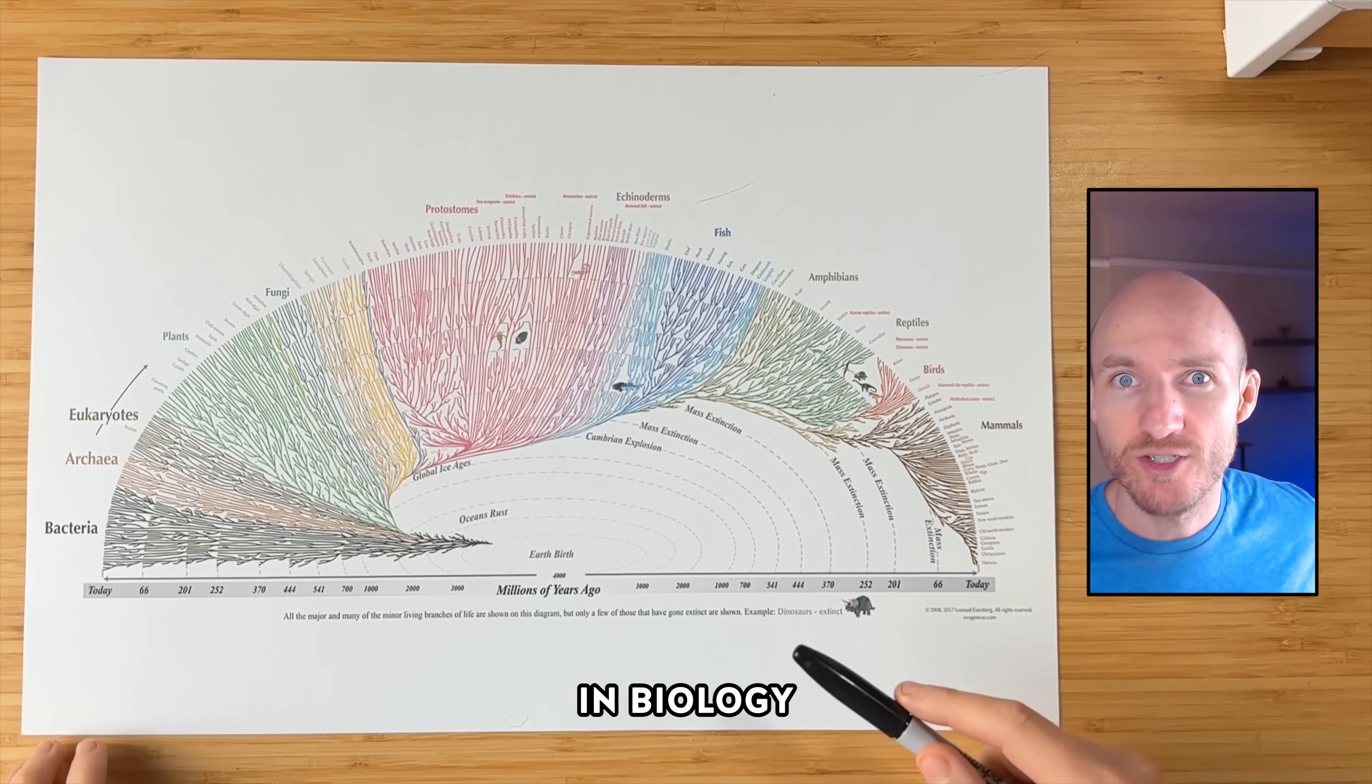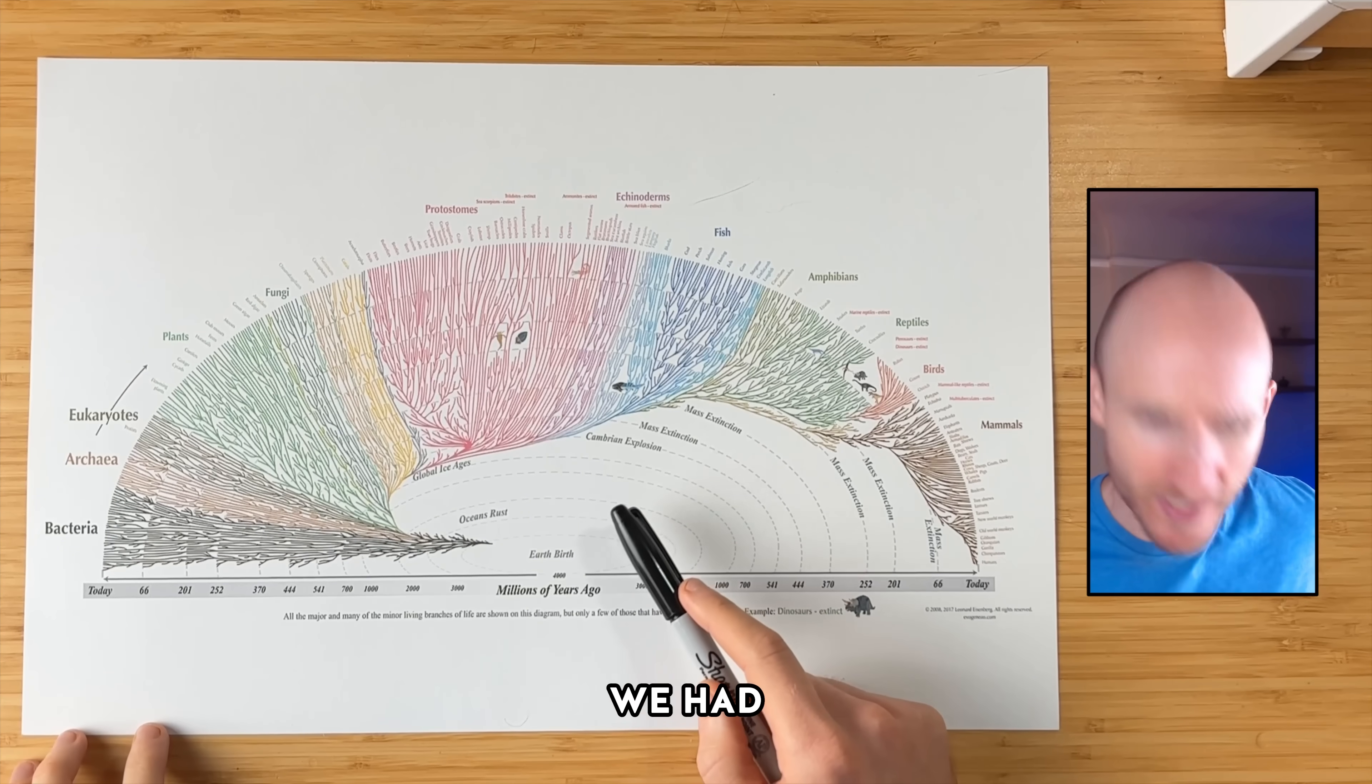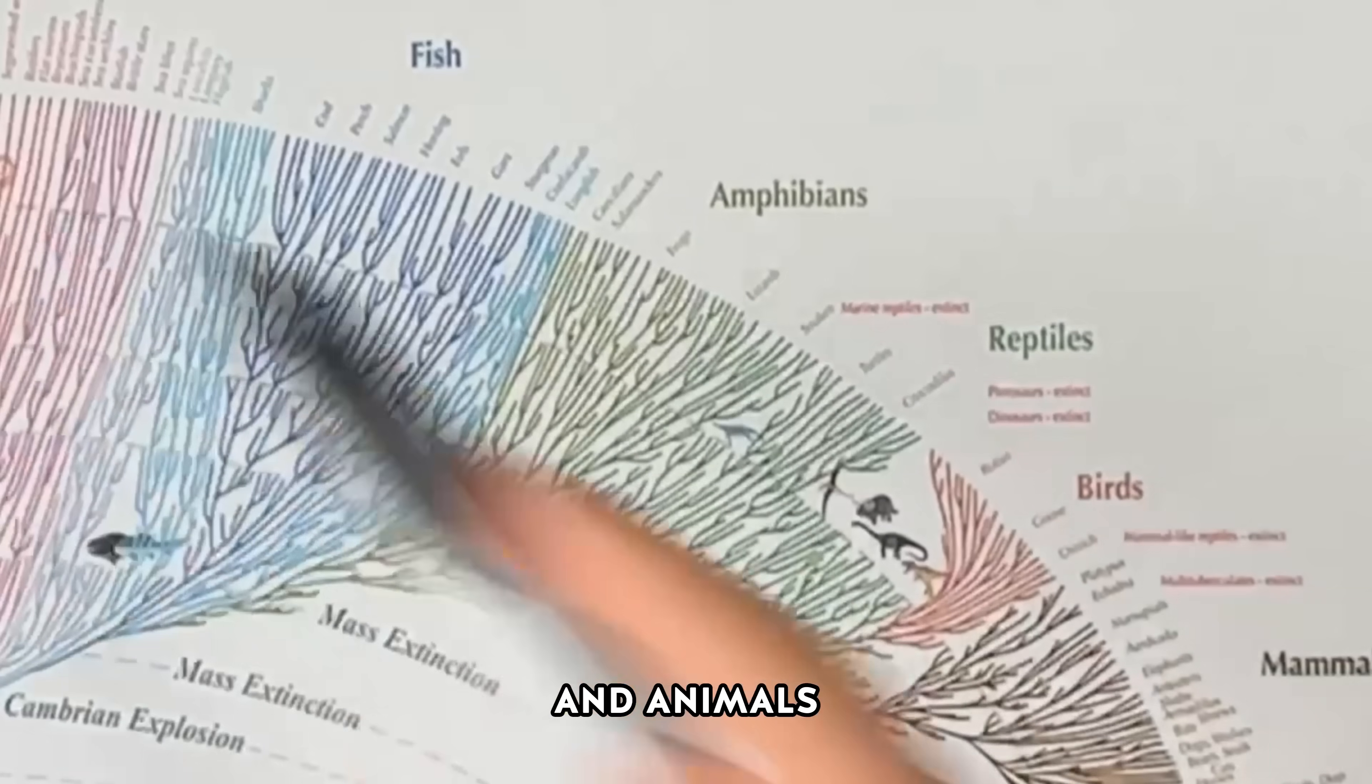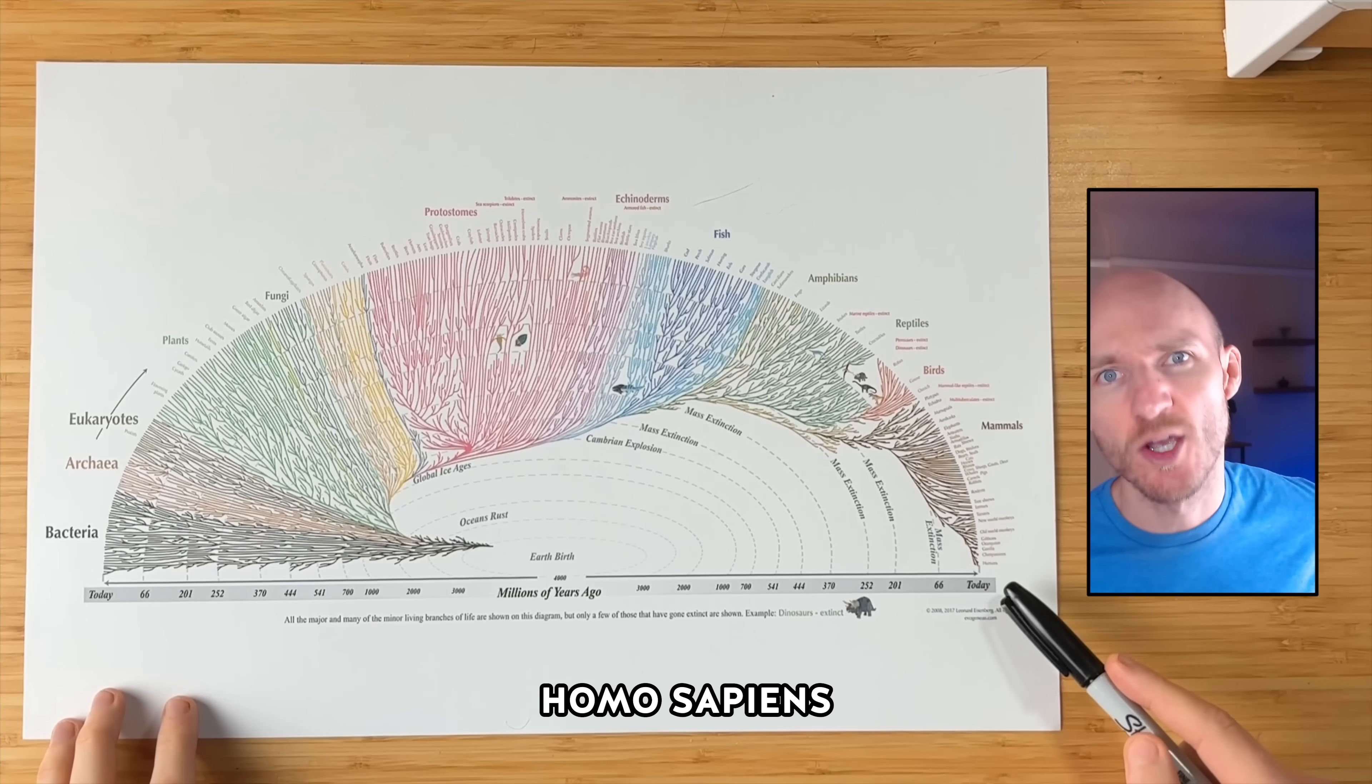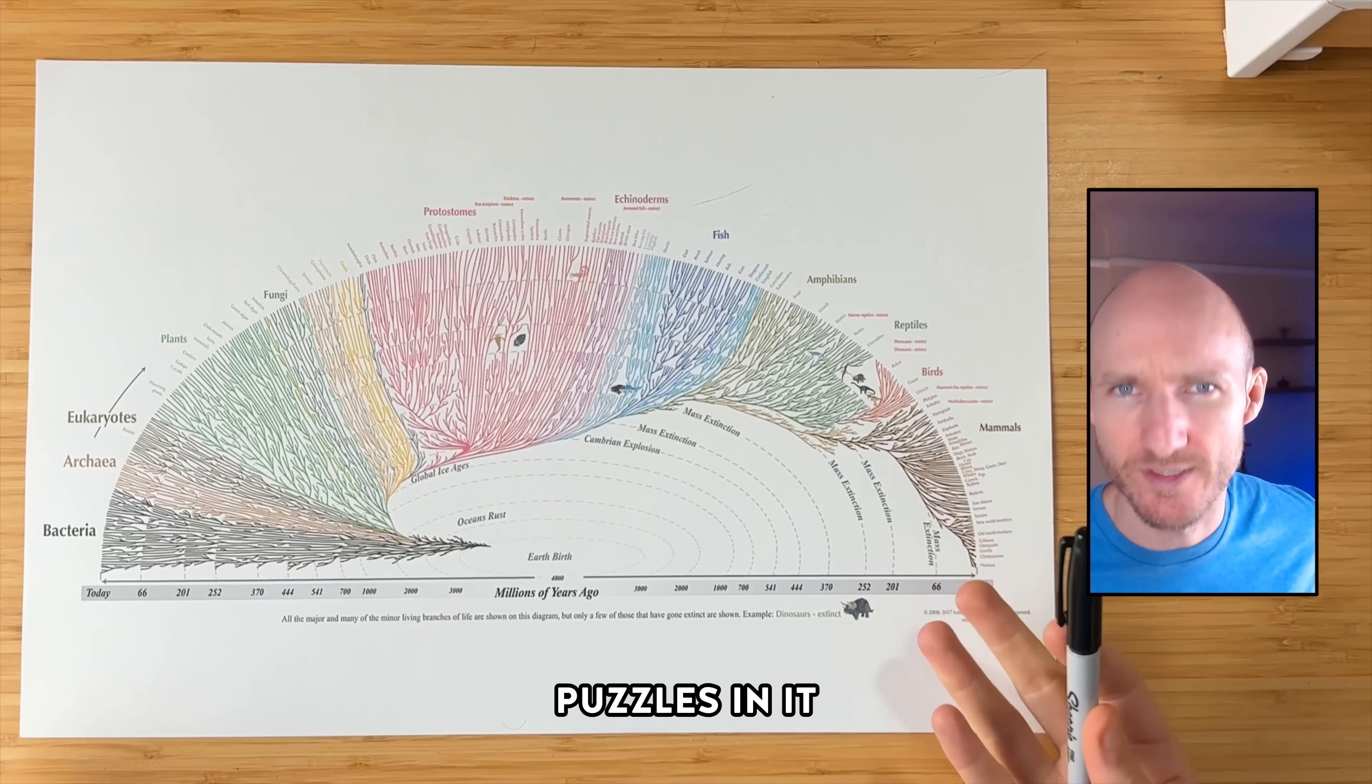This might be the craziest graph in biology. For billions of years, life stayed small, like bacteria. And then 500 million years ago, we had the Cambrian Explosion, which created all of this big life—plants and fungi and animals. And even after five mass extinctions, we got mammals and then us Homo sapiens. So today we're going to tell the story of this chart. And this chart has four big puzzles in it.